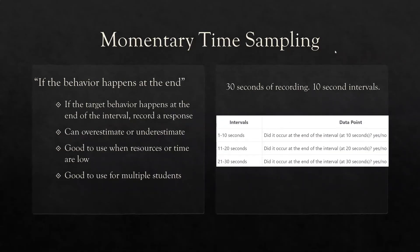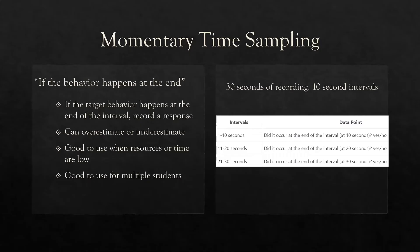Momentary time sampling: if the behavior happens at the end of the interval. It's great if you cannot continuously observe your learner — for 29 seconds of a 30-second interval you can do other things, and only at 30 seconds do you check in. It can overestimate or underestimate depending on when you catch the learner. Some savvy learners will intentionally manipulate momentary time sampling by skewing the data when they know the interval is up.